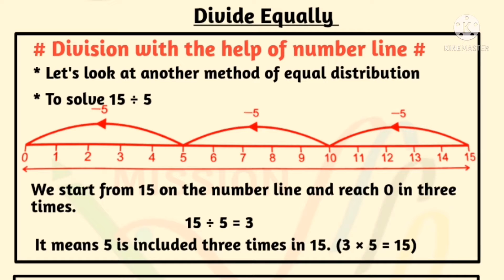To solve 15 divided by 5, we start from 15 on the number line and reach 0 in 3 times. It means 5 is included 3 times in 15.